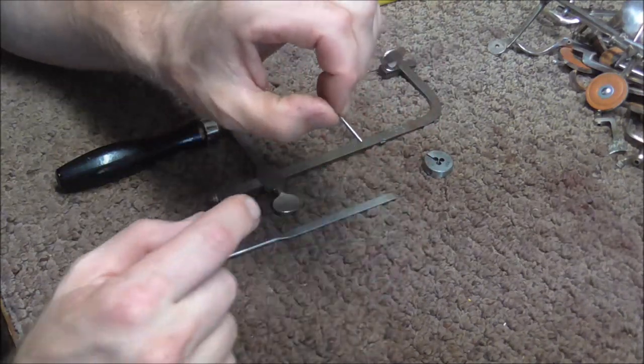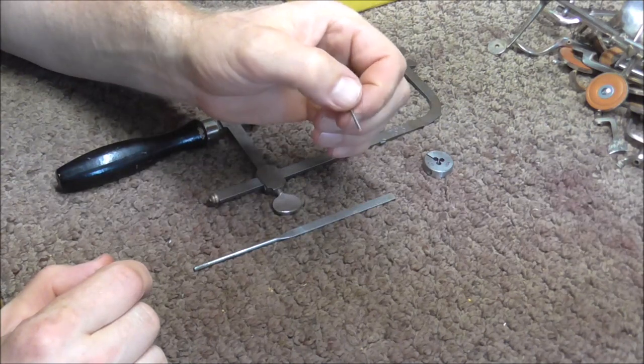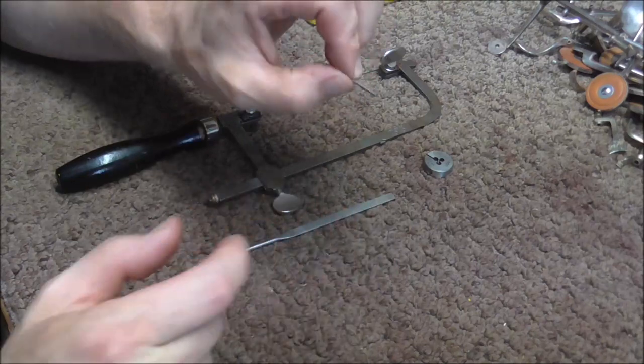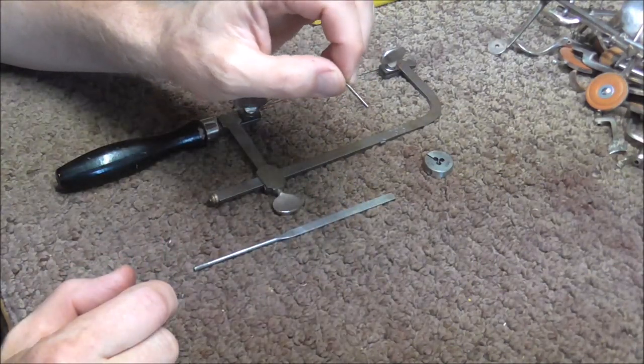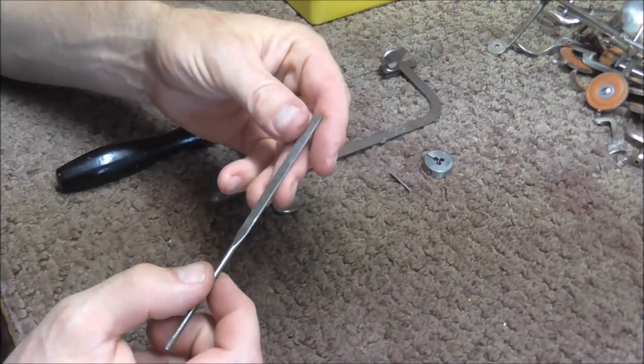You will also need a hinge rod, a small one, approximately 75 thousandths of an inch. You can measure it on a micrometer to see that it's about that size. It can be a little bigger or a little smaller, but approximately that size. And you can get these off of a junk clarinet if you need to. And then you will also need a small file.